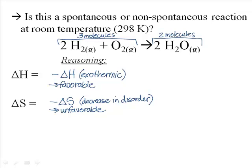So is this reaction spontaneous or non-spontaneous? My delta H is favorable, but my delta S is not favorable. I have two competing factors — one favorable and one unfavorable. At this point, I'm going to actually need the numbers to figure this out, and I'll use those numbers to calculate the delta G and draw my conclusions. The numerical data can be found by doing an experiment or looking it up in scientific literature.